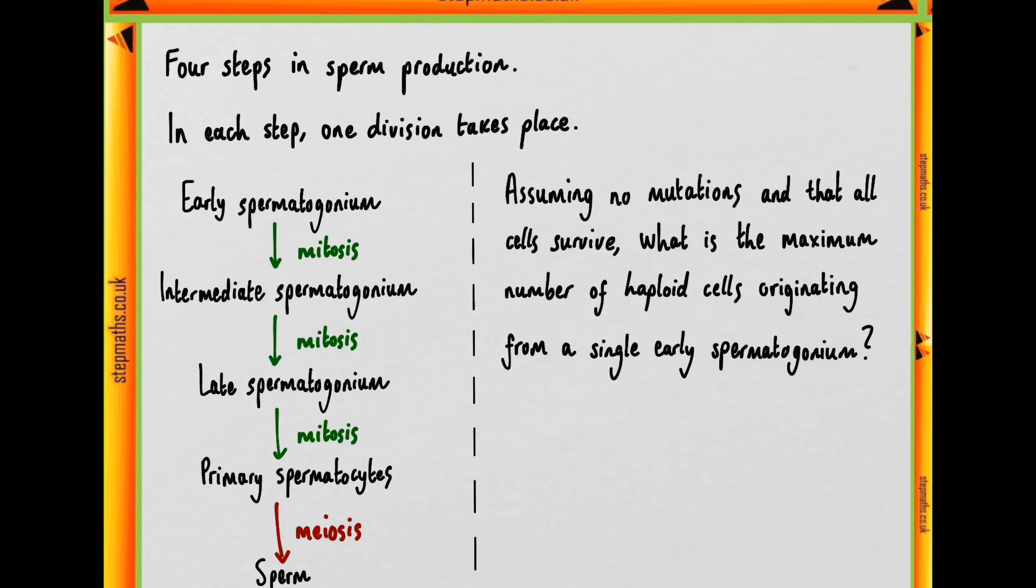So haploid cells, we should know, are the cells you find in gametes. Now, mature sperm are gametes. However, all these precursor cells are going to be diploid cells, because they are produced by mitosis, as you can see in the diagram.